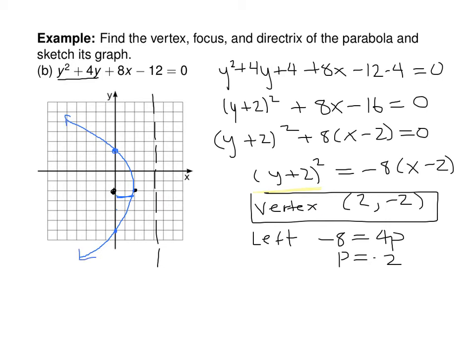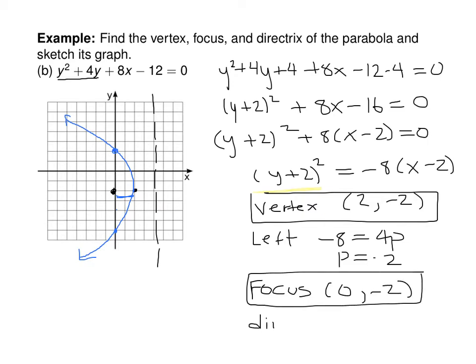The focus is the point (0, −2), and in this case the directrix is the vertical line x = 4.